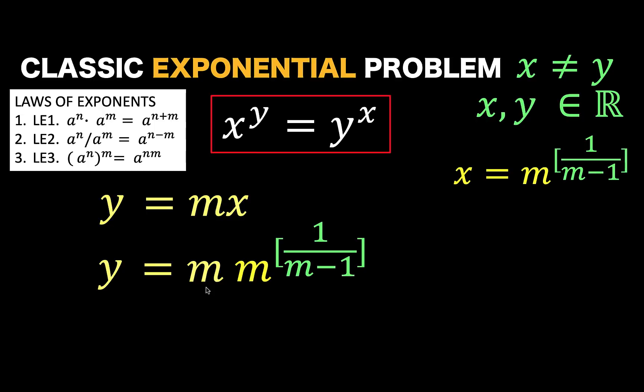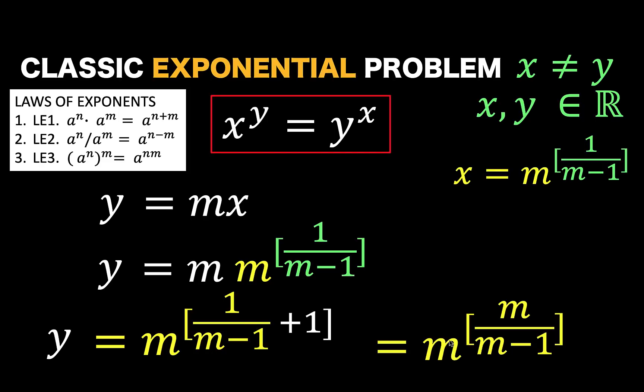So, we copy the common base m, and we add the exponents 1 over m minus 1, plus the implied exponent of 1 here, which is now this white 1. And simplifying this exponent,